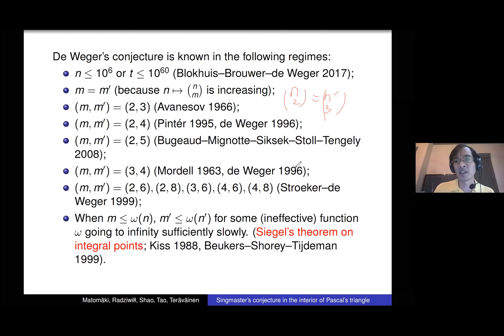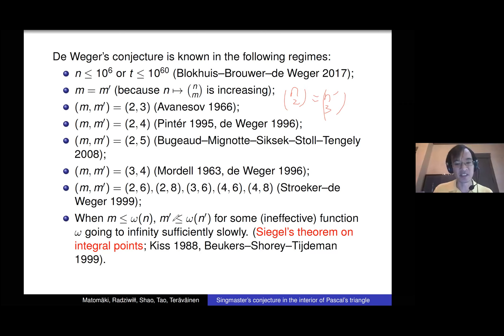Siegel's theorem is ineffective — it doesn't give any bounds on where the integer points are. So we know that if m and m' are small enough there are no extra solutions, but we don't have an effective bound on this.